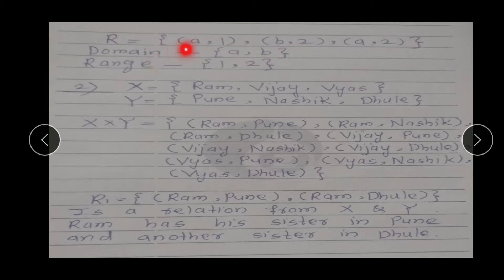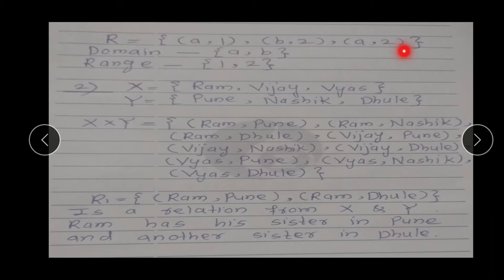अब यहाँ पर हमारा domain क्या रहेगा? First coordinate जो है वो है a, b, a — यहाँ पर a and b हमारा domain बन जाएगा. And then जो second coordinate है वो हैं 1, 2, 2 — यहाँ पर हम element को repeat नहीं करेंगे क्योंकि set में repetition allowed नहीं होता है. So, our range becomes {1, 2}.